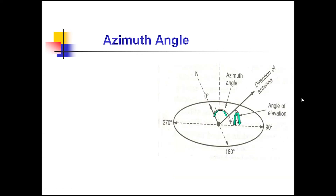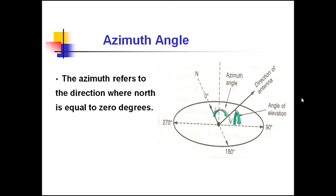Azimuth angle refers to the direction where North is equal to 0 degrees. Azimuth angle is calculated as the horizontal movement of the antenna. From 0 degrees North, the antenna position is measured horizontally with respect to Earth, and the angle made with respect to 0 degrees North is called the azimuth angle. The vertical angle is called the elevation angle.